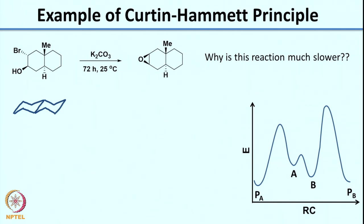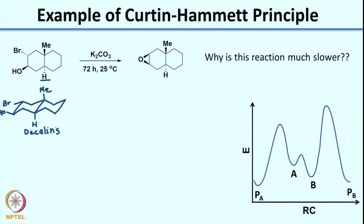This is the chair form: Me is going up and H is coming down. Now we have Br coming down, so Br coming down means it is equatorial, and we have OH coming up. What you see is in this particular molecule, with these decalins — these are called decalins — the conformation is locked because the ring cannot flip.